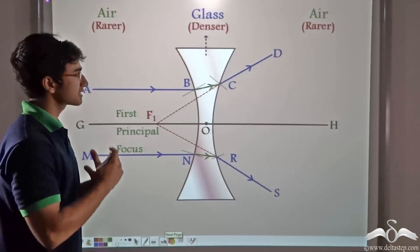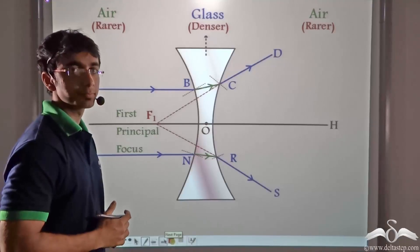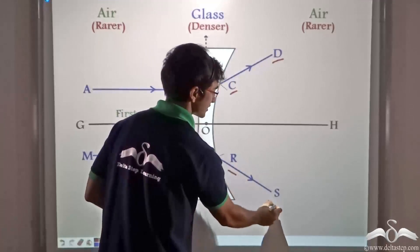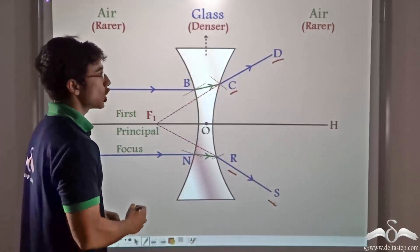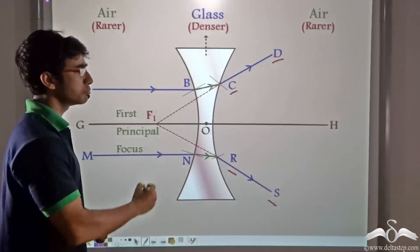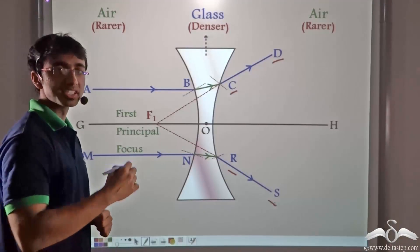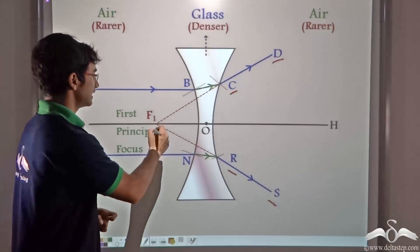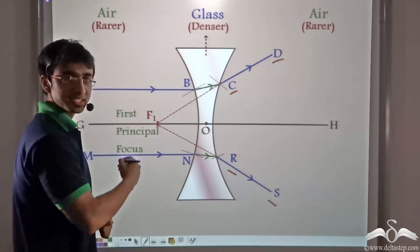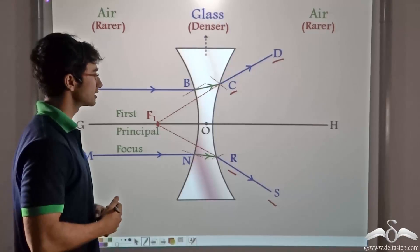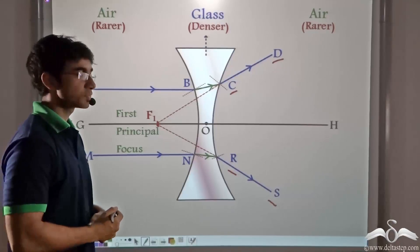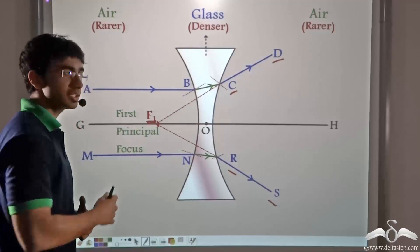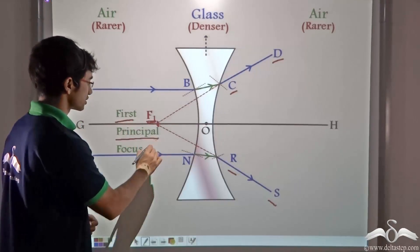Now let us consider this ray diagram once again. You will notice that when rays CD and RS are moving outwards or diverging, they are not meeting at any point on the principal axis. But they seem to be coming from a point that lies on the object side — in other words, they seem to be diverging from a point that is F1. F1 is termed as the first principal focus.